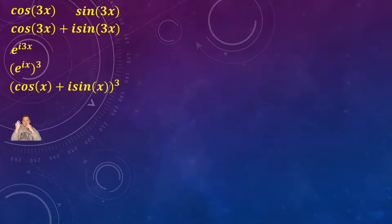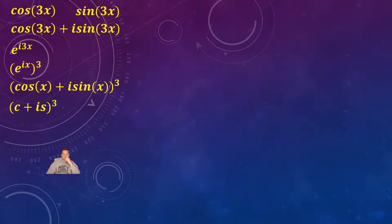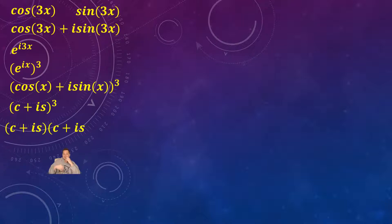So far we're just manipulating this. Now to save time and space, I'm going to label cosine x as just c and sine x as just s. So it's going to look like c plus i·s to the third — remember what it represents: cosine x plus i sine x to the third. This is a quantity raised to the third, so we can expand it. I'll just multiply it out: c plus i·s, times c plus i·s, times c plus i·s.